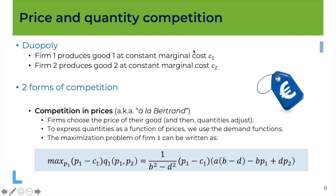So let's start with the competition in prices, which is sometimes called à la Bertrand. Bertrand, as we will present in the rest of this week's material, is an economist who gave his name to this type of competition because he was the first to model it. Basically what happens here is that firms choose the price of their goods and then quantities will adjust.